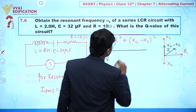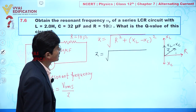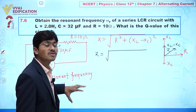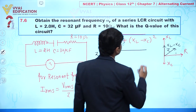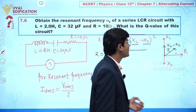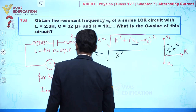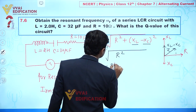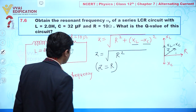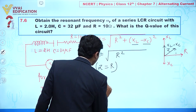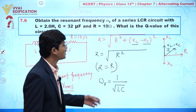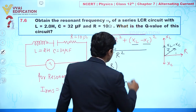So Z equals the square root of R² plus (XL minus XC)². Now, for resonant frequency, the condition is that XL equals XC. When XL equals XC, the expression under the root reduces to just R², meaning the impedance Z equals R. Our objective is to calculate this resonant frequency omega r, which is given by 1 over the square root of LC.